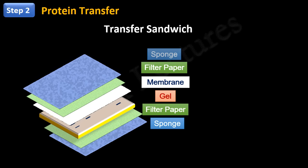Filter paper provides a uniform flow of transfer buffer through the gel. This facilitates the movement of proteins out of the gel and onto the membrane. And the sponge maintains the proper pressure during the transfer.